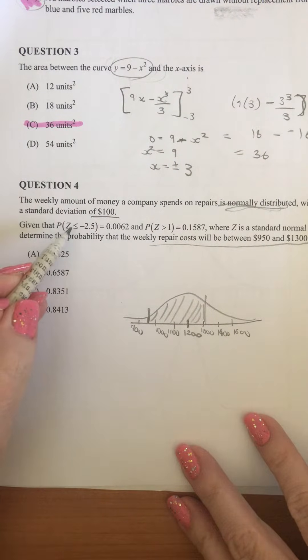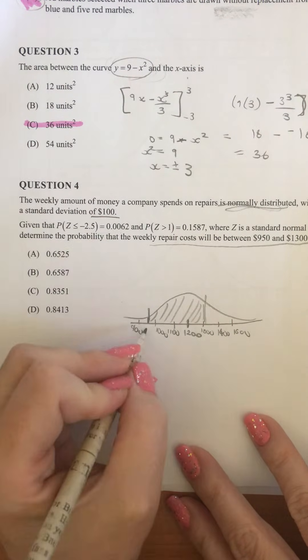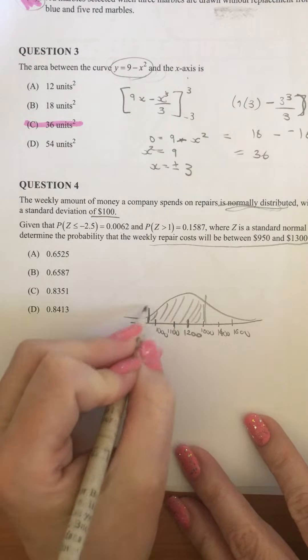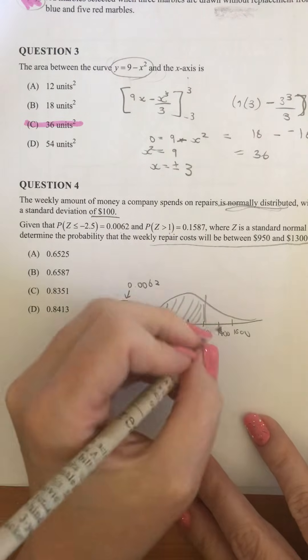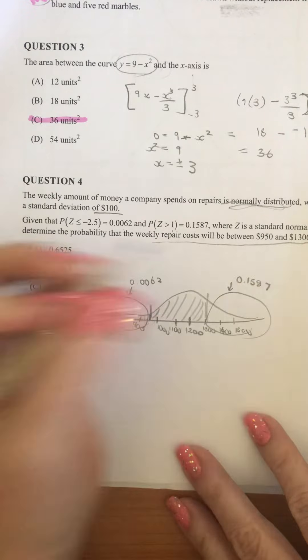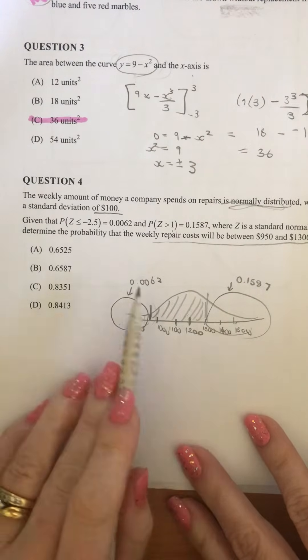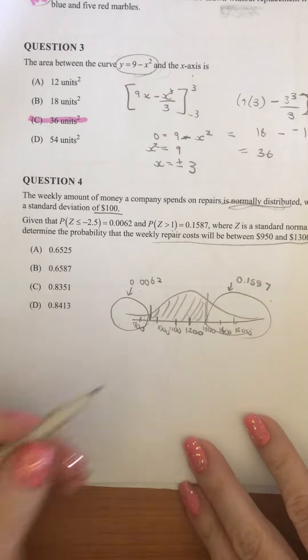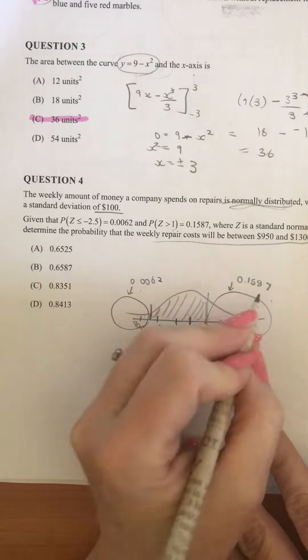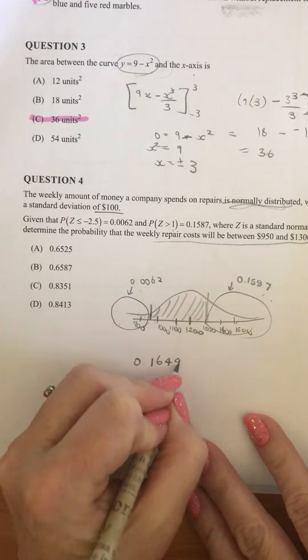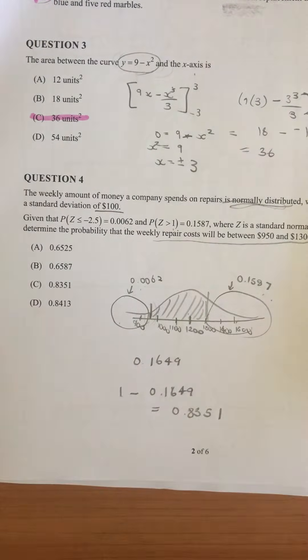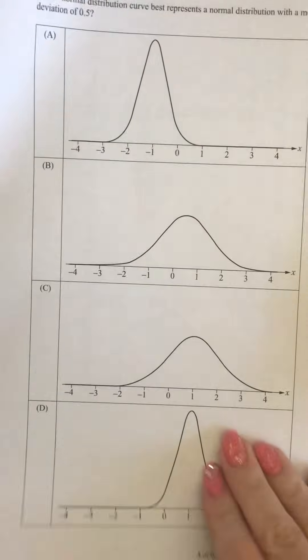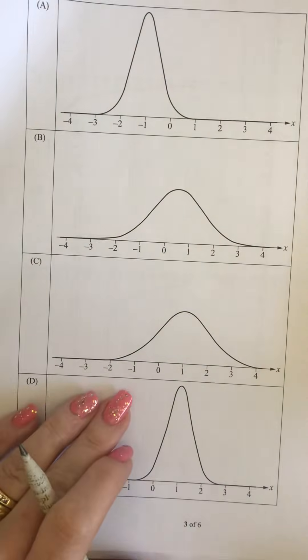Now we're told that when Z is less than negative 2.5, it's 0.0062. So that's telling us because we've got 1 standard deviation, 2 standard deviation, 3, that's the 2.5. So we're being told this part of it here is 0.0062. Then we're told when Z is greater than 1, it's 0.1587. So that's this part of it. And we want to know the in-between. So we know those three parts would add to 1. So if we can add these two together and then subtract it from 1, we can work out that probability. So when we do the 0.0062 plus 0.1587, we get 0.1649. And when we do 1 take 0.1649, that's going to give us 0.8351. So you may have to do some working out there if you can't do that in your head. Now, question number 5. The answer of C there.